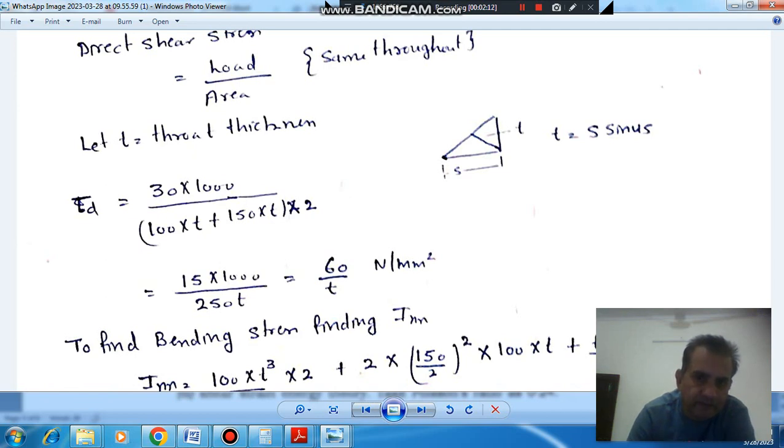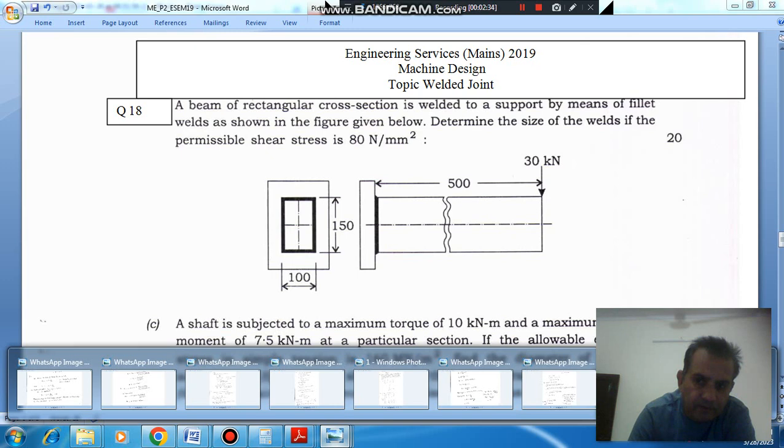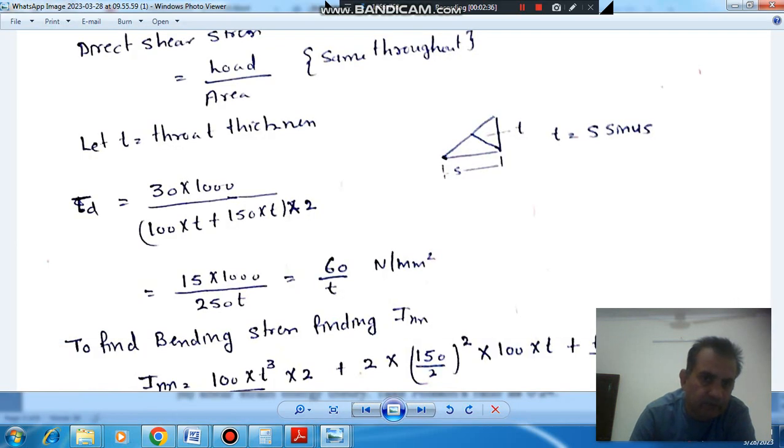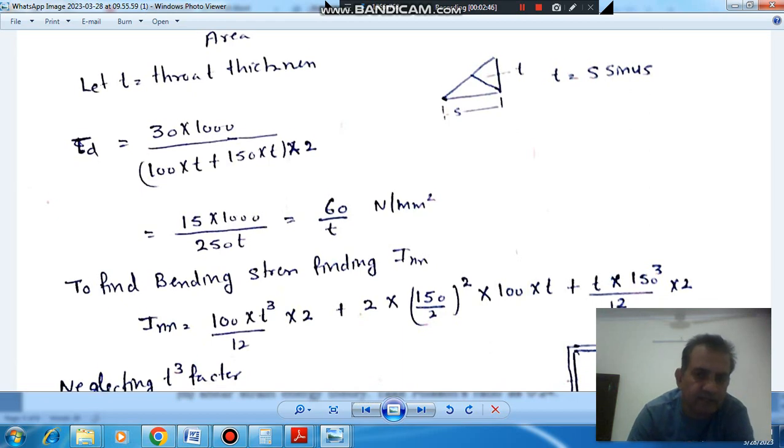So weld length is 100, so that area will be 150 perpendicular to this. And for that, for the base section the area will be 150 and similarly for this section the area will be 100. So the total area will be 150 plus 100 into 2. So this will be load 30 kN. So this will be direct shear stress, 60 by T, direct shear stress.